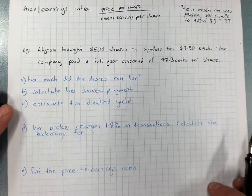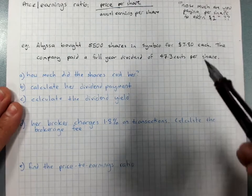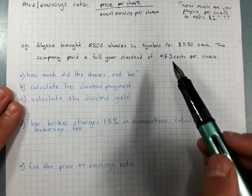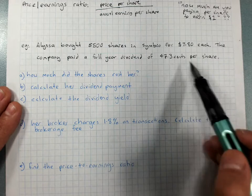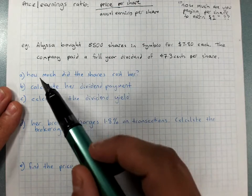So let's have a look at some of these. Alyssa bought 8,500 shares in a company called Symbio for $7.80 each. The company paid a full year dividend of 47.3 cents per share. So a lot of these questions are going to just be logic.